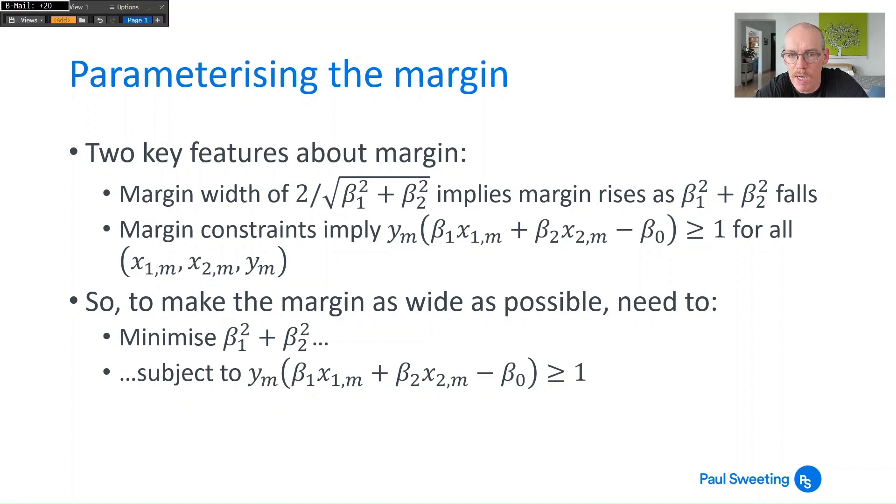So why is it going to be greater than or equal to 1? Well if you remember the equations before where you had everything below the line if yₘ was minus 1 and above the line if it was yₘ was plus 1, you're always multiplying it by a negative if it's below the line and by a positive if it's above the line so you'll always end up with an expression greater than or equal to 1.